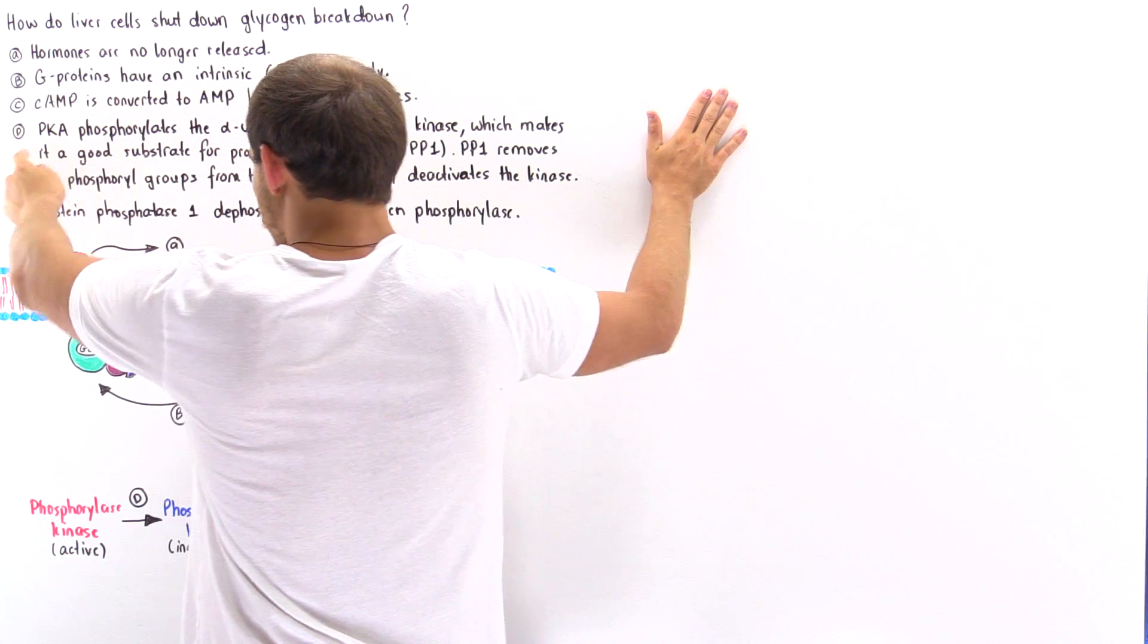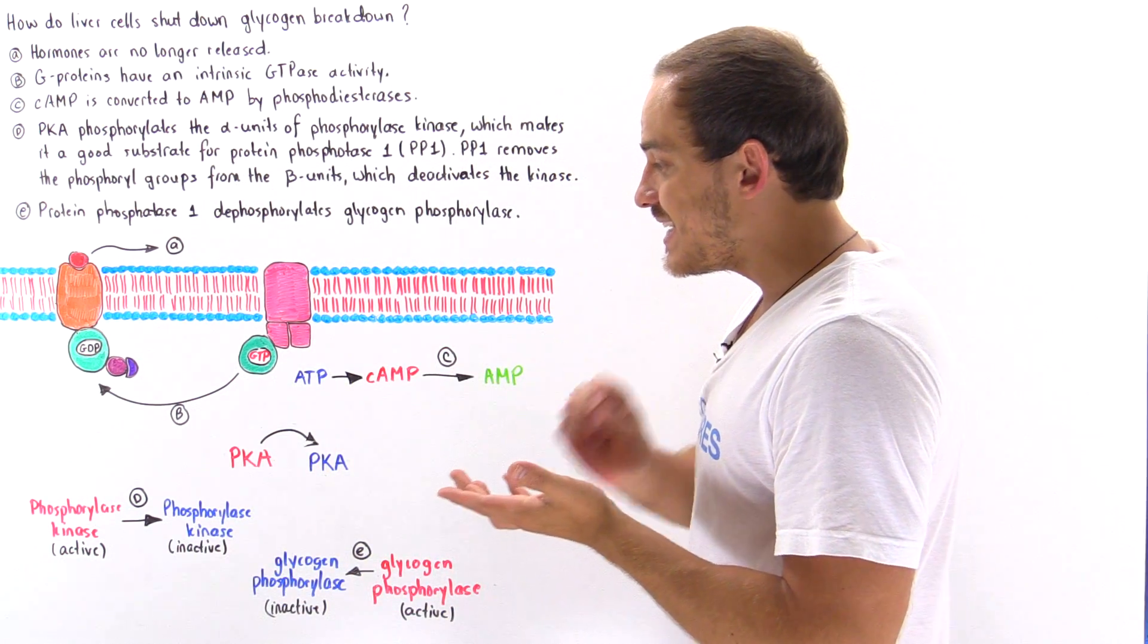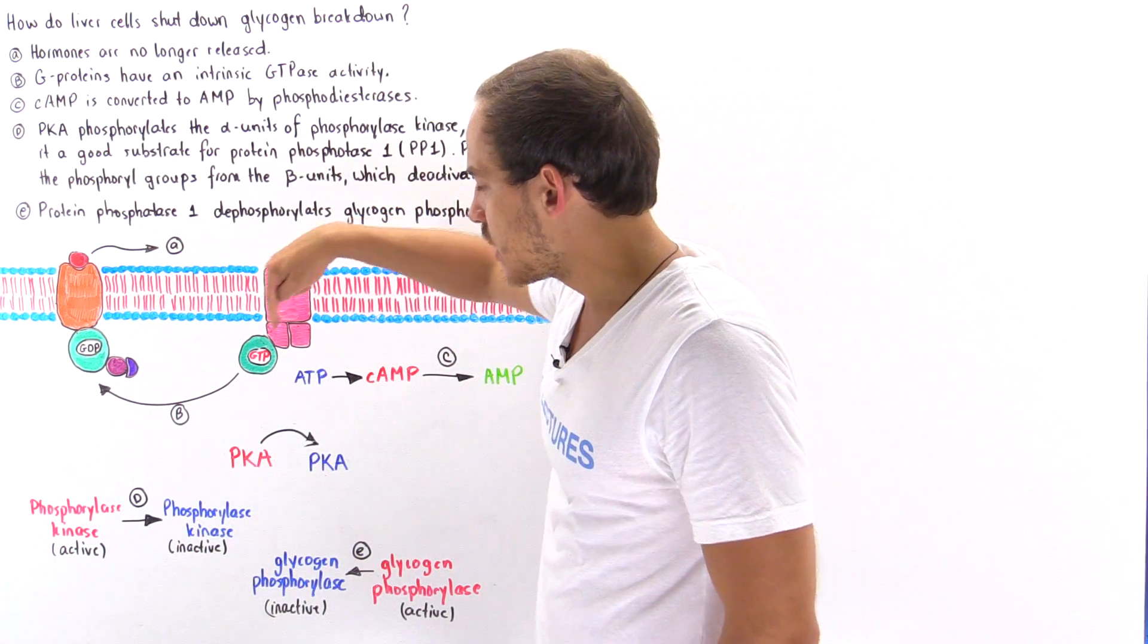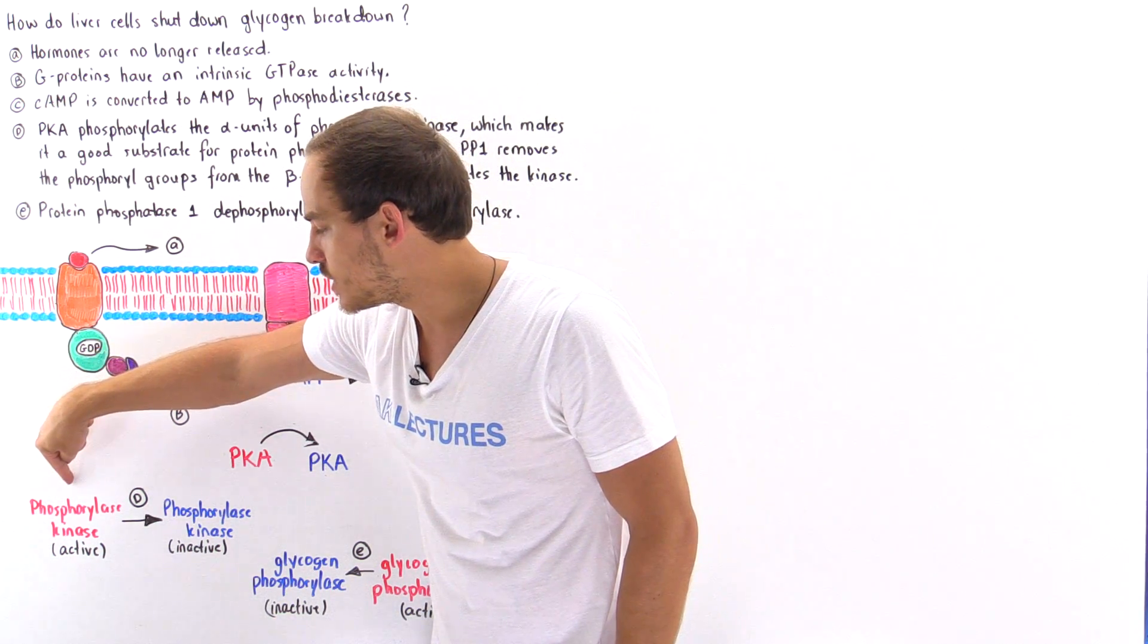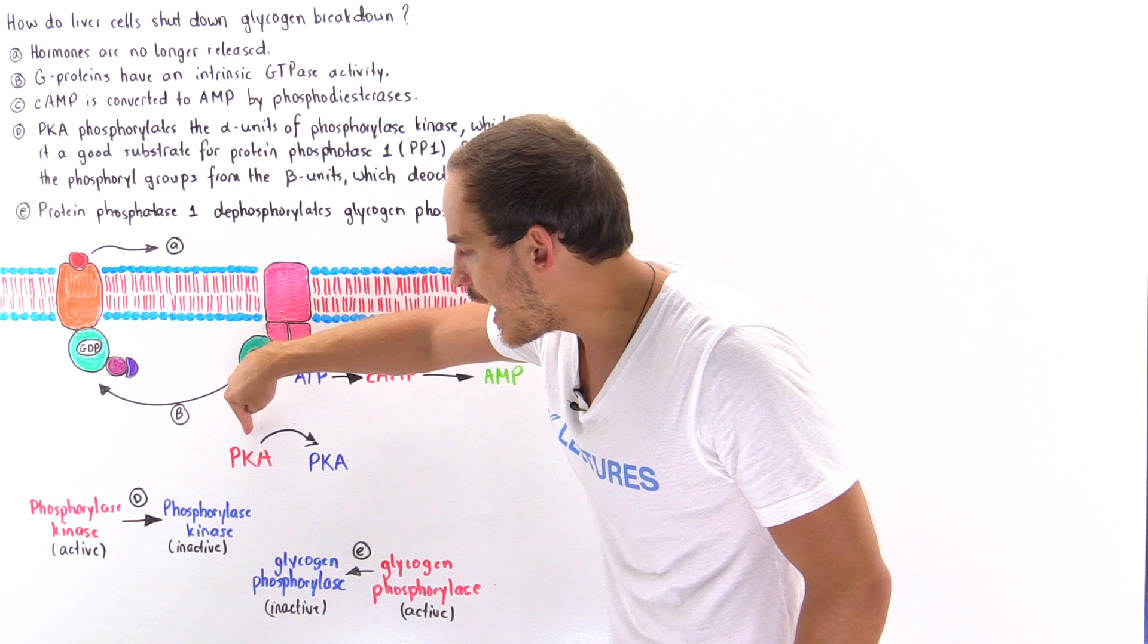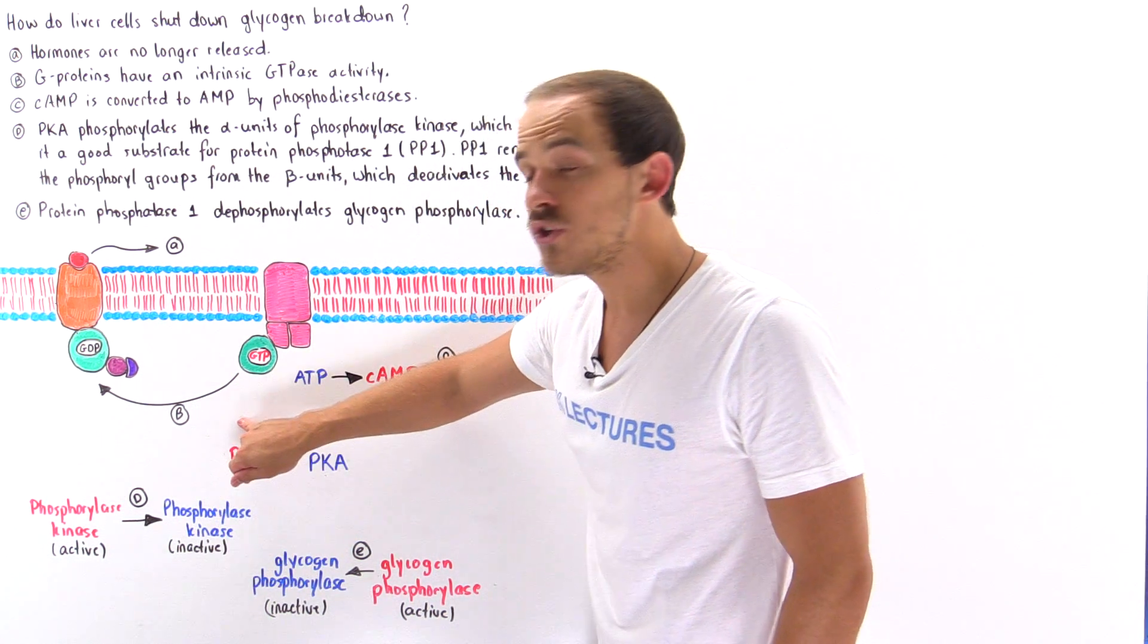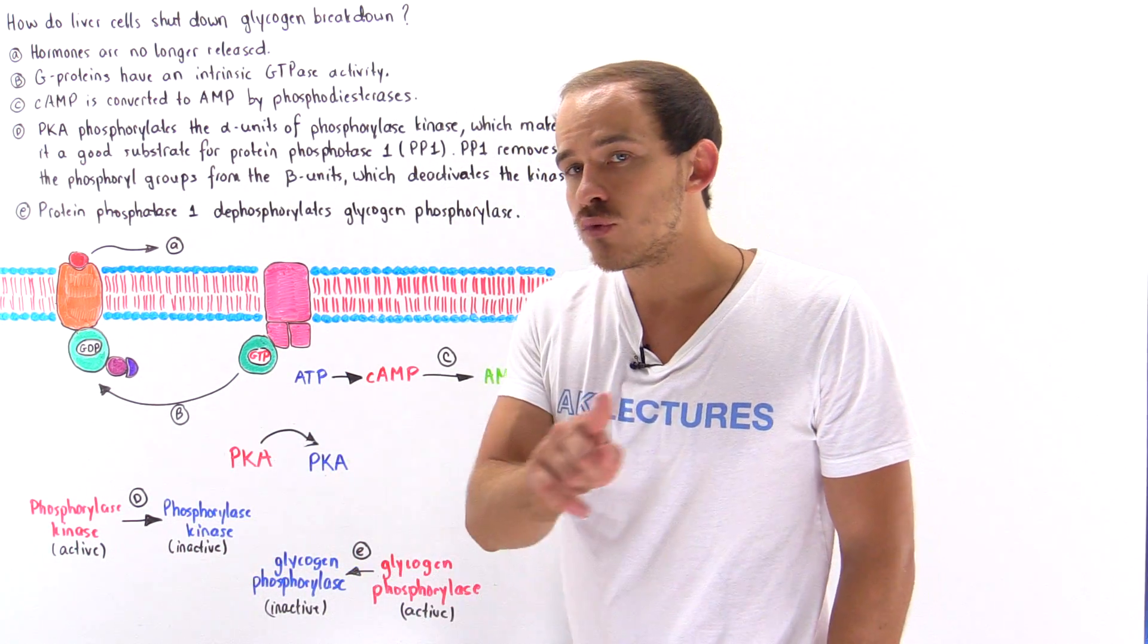Let's focus on D. In order to inactivate the phosphorylase kinase, what happens is the PKA must phosphorylate the alpha subunits of phosphorylase kinase. The same PKA that is used to activate phosphorylase kinase is also used to inactivate phosphorylase kinase.